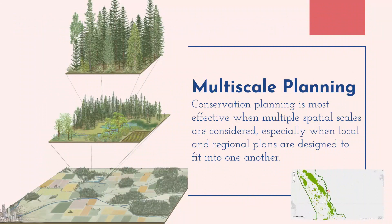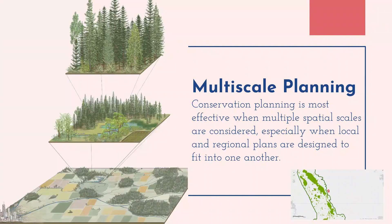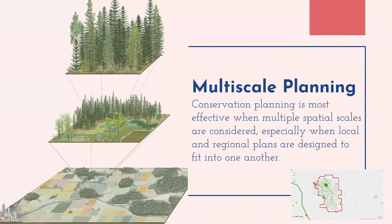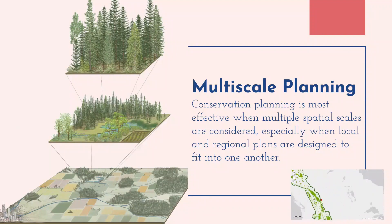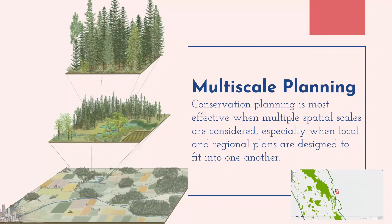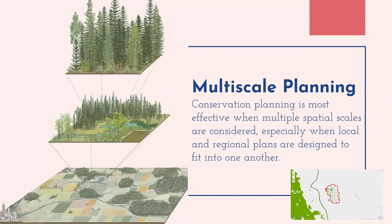The general trend in conservation has been to think on bigger and broader spatial scales, even on entire continents like the Yellowstone to Yukon initiative. This broad scale work is incredibly important to set the big picture for conservation, but one of the drawbacks is that it is too coarse a scale to pick up on the spaces of conservation importance in urban areas. Habitat patches in urban areas tend to be quite small, so they get lost in broader scale planning.